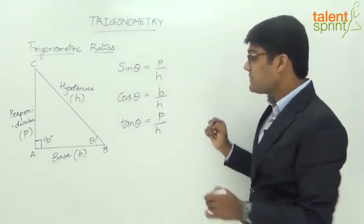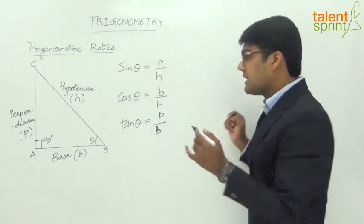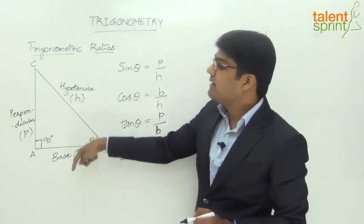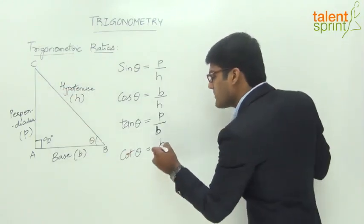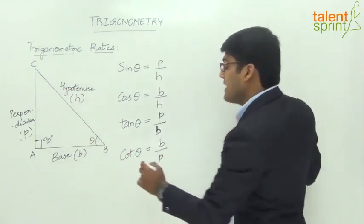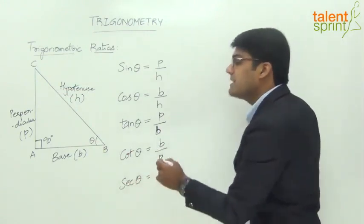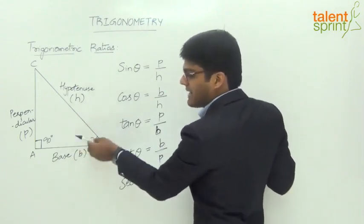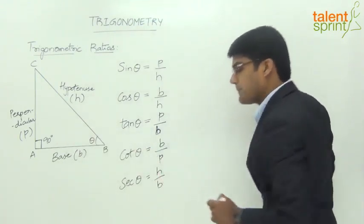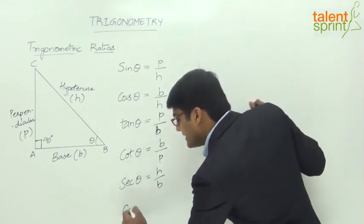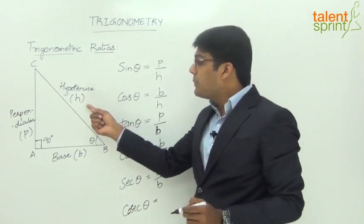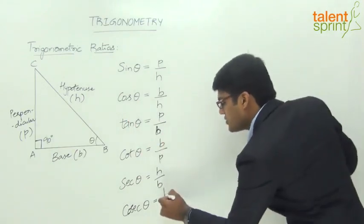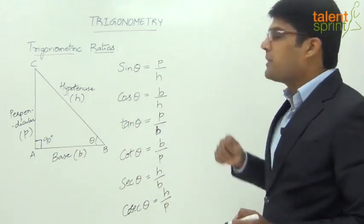Next comes cot theta. Cot theta is the ratio of the adjacent side to the opposite side, so cot theta equals b by p. Next we have secant theta — secant theta is the ratio of the hypotenuse to the adjacent side, so sec theta equals h by b. The last one is cosecant theta, which is the ratio of the hypotenuse to the opposite side, so cosec theta equals h by p. These are the six different trigonometric ratios.